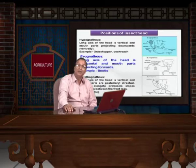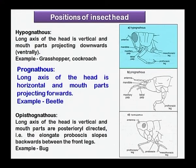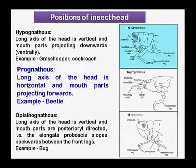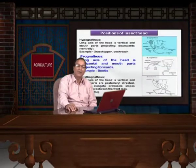The head is attached to the body in different positions: hypognathous, prognathous, and opistognathous. In hypognathous, which is common in the grasshopper, the head is attached vertically. In prognathous, the head projects forward and the best example is the beetle. Opistognathous type of head attachment is common in bugs or plant-feeding bugs, where the head is bent downward.